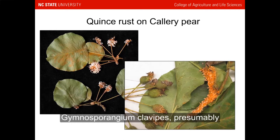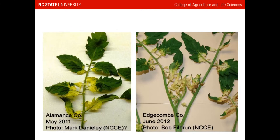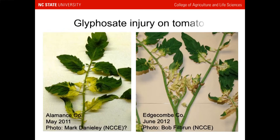What caused the yellowing in this tomato leaf — bacteria, fungus, virus, or none of the above? None of the above. Remember, it's not always a disease. This is classic glyphosate injury on tomatoes — bright yellow discoloration at the base of the leaf. Tomatoes are very sensitive to glyphosate. If you spray Roundup or another glyphosate-containing product and a little drift reaches the plants, this is what you will see.